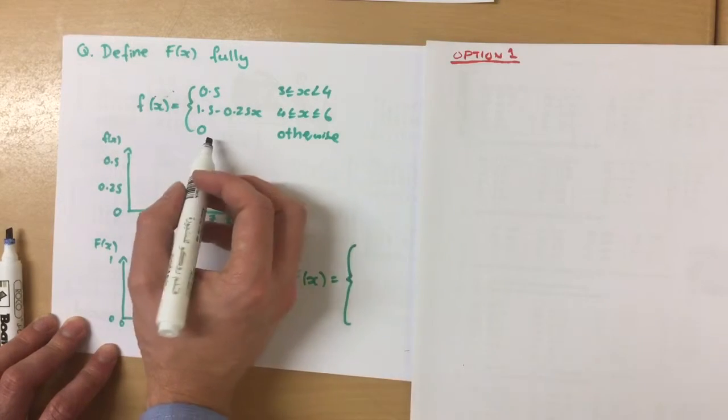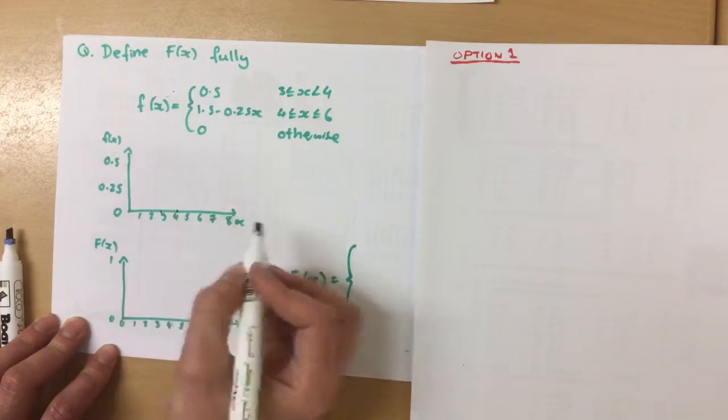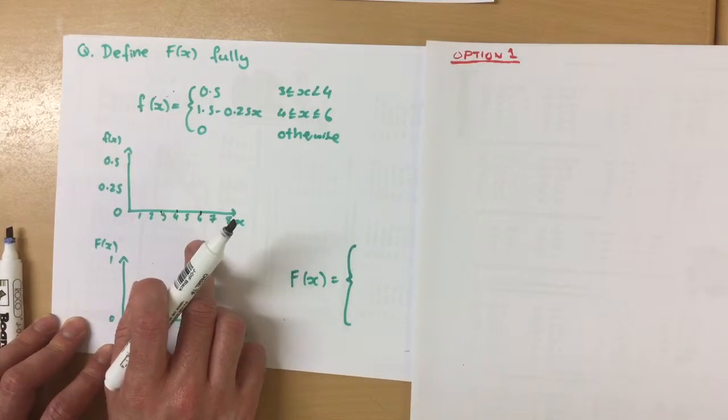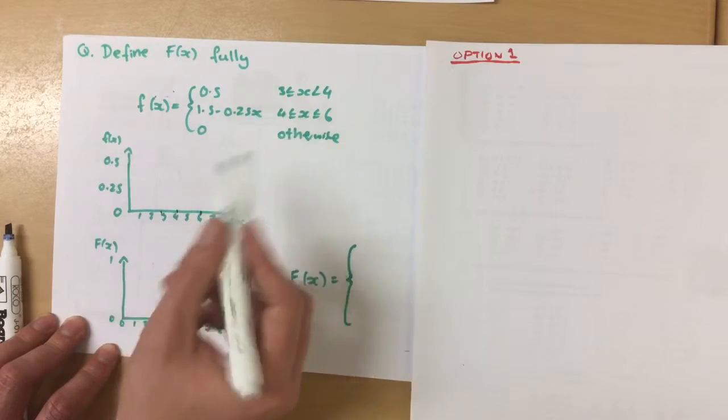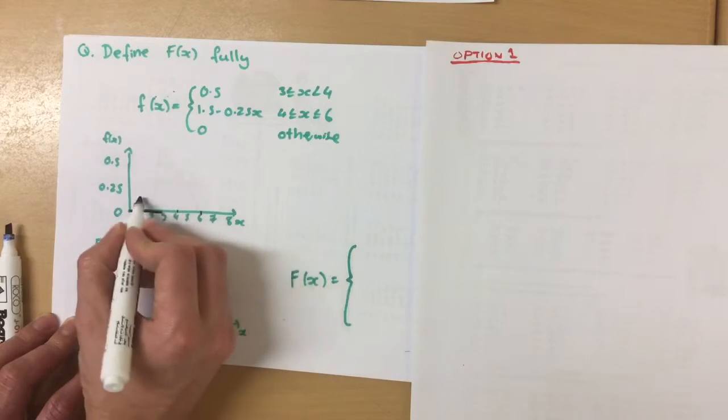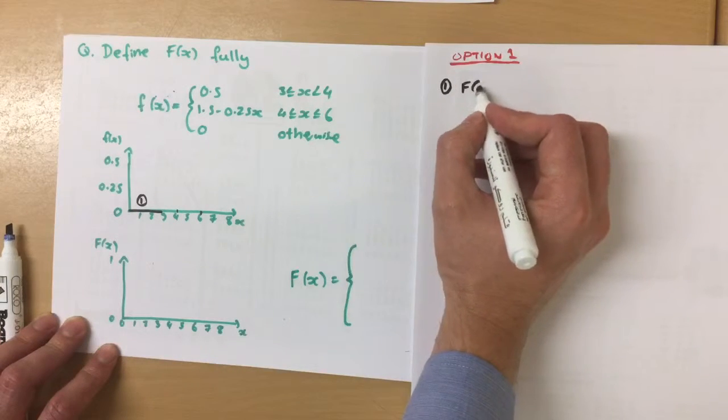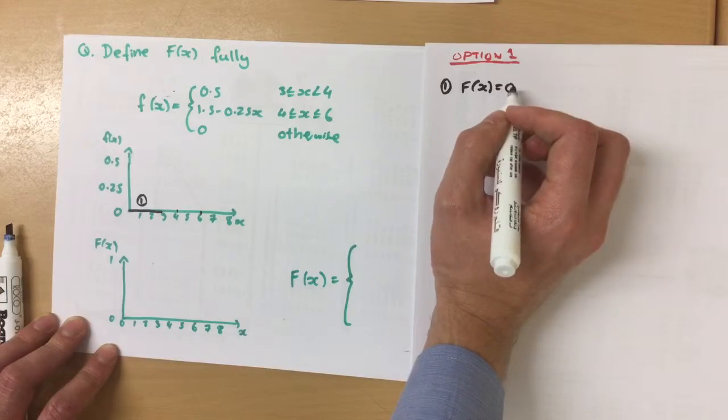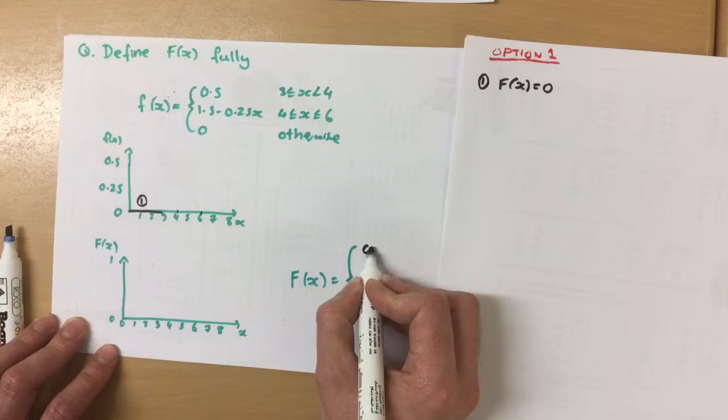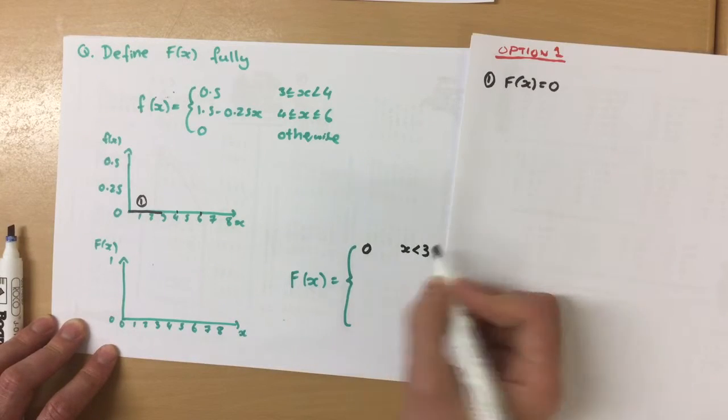So let's take this. First of all, the values where stuff happens are between 3 and 4, and 4 and 6. So this is our normal probability function. Now between less than 3, it's going to be 0. So we start off the first part of our graph. Our cumulative distribution is going to be 0 no matter what. Because up to this point, it's going to be 0. So the first one is easy. So our cumulative distribution function is 0 when x is less than 3.